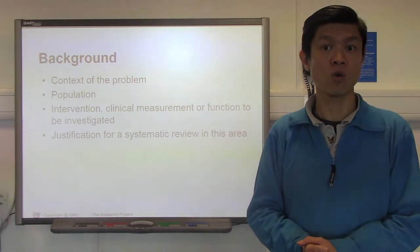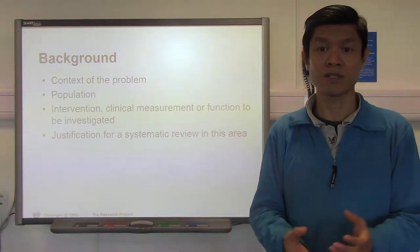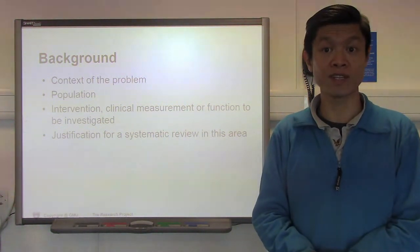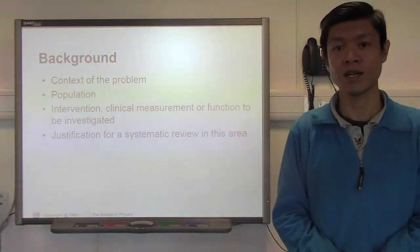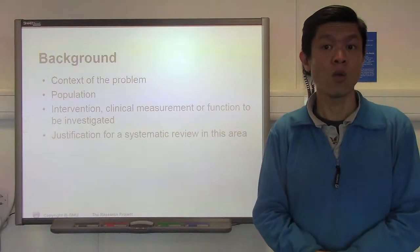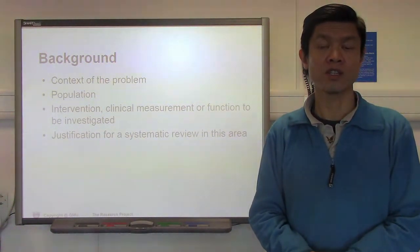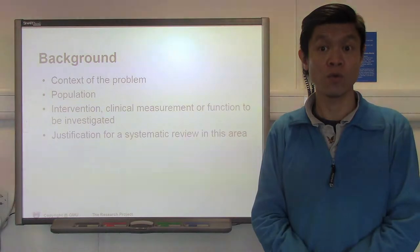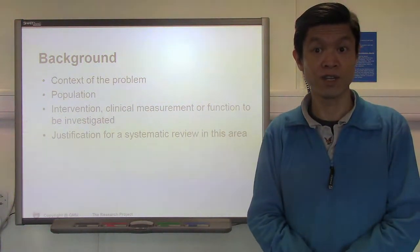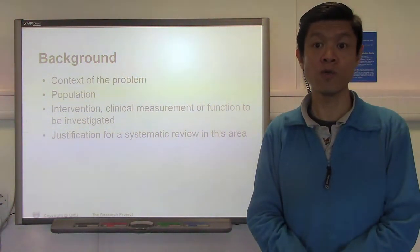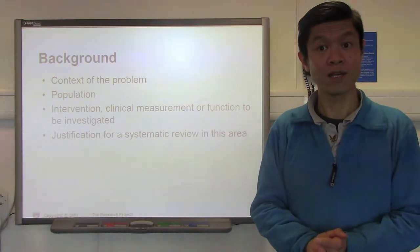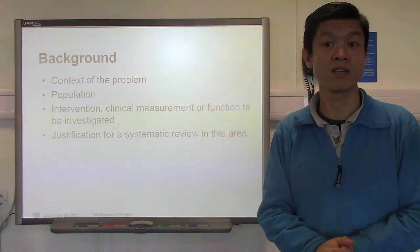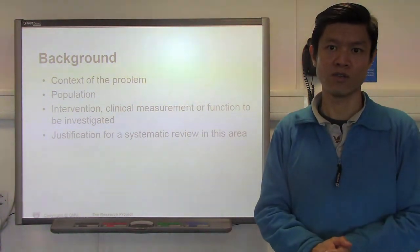You need to state specifically what it is that you're trying to measure. And very lastly, you need to justify why it's important to actually conduct a systematic review within this particular area. So always look back into the evidence to see where the knowledge gap is, and that will lead you much more clearly to how to justify your question.